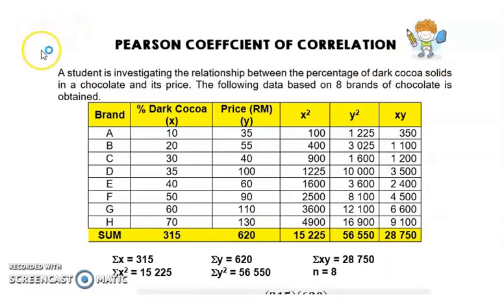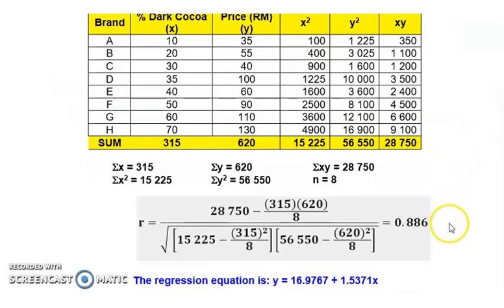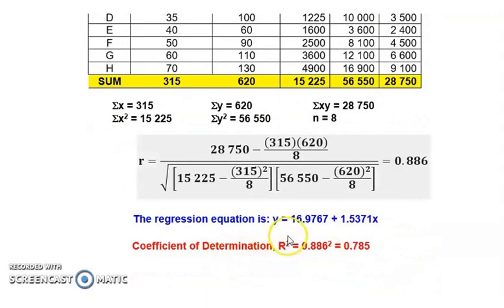Recall our previous data where we already calculated the Pearson coefficient of correlation. Based on this data, our Pearson correlation is 0.886, indicating a strong positive correlation between the percentage of dark cocoa contained in the chocolate and its price. Now we want to determine the coefficient of determination, which indicates the accuracy of the prediction using the regression equation. We simply square 0.886 to get 0.785.